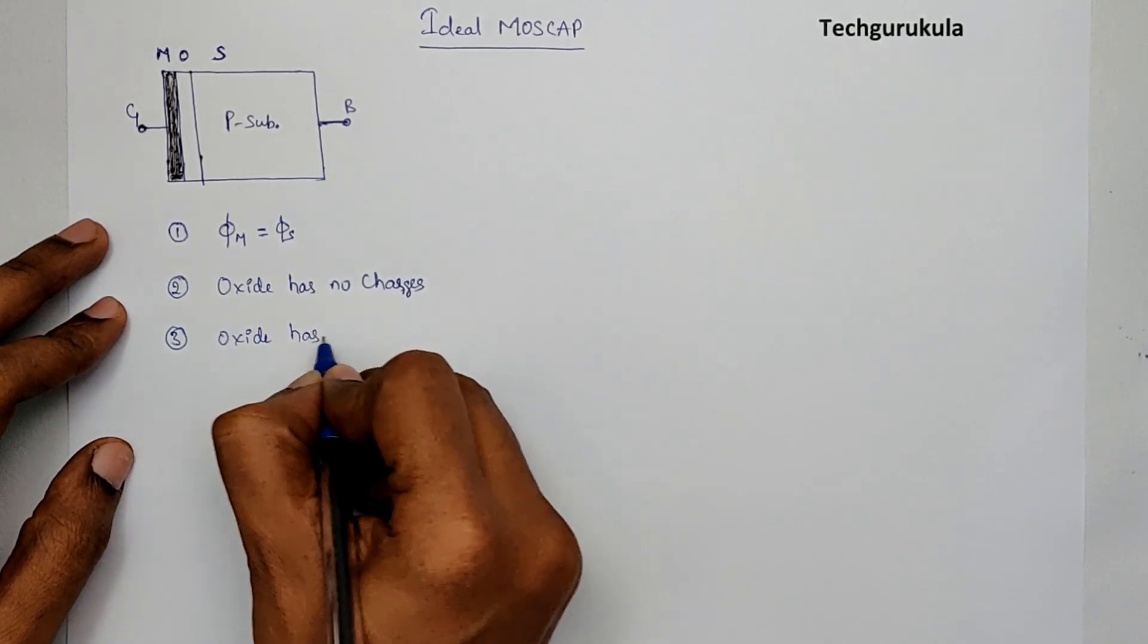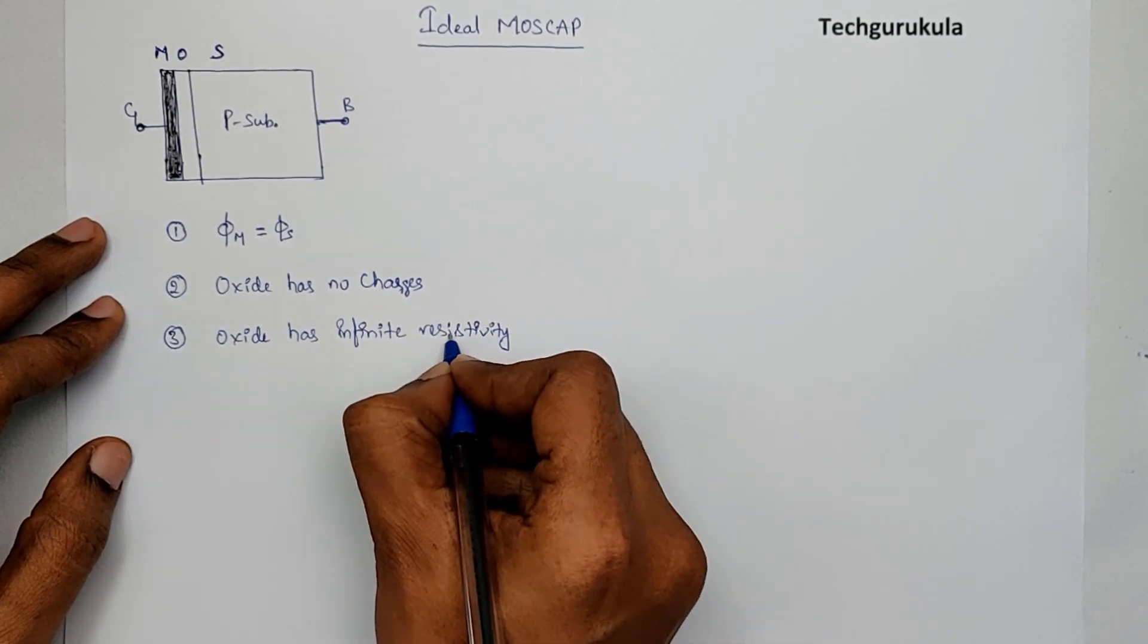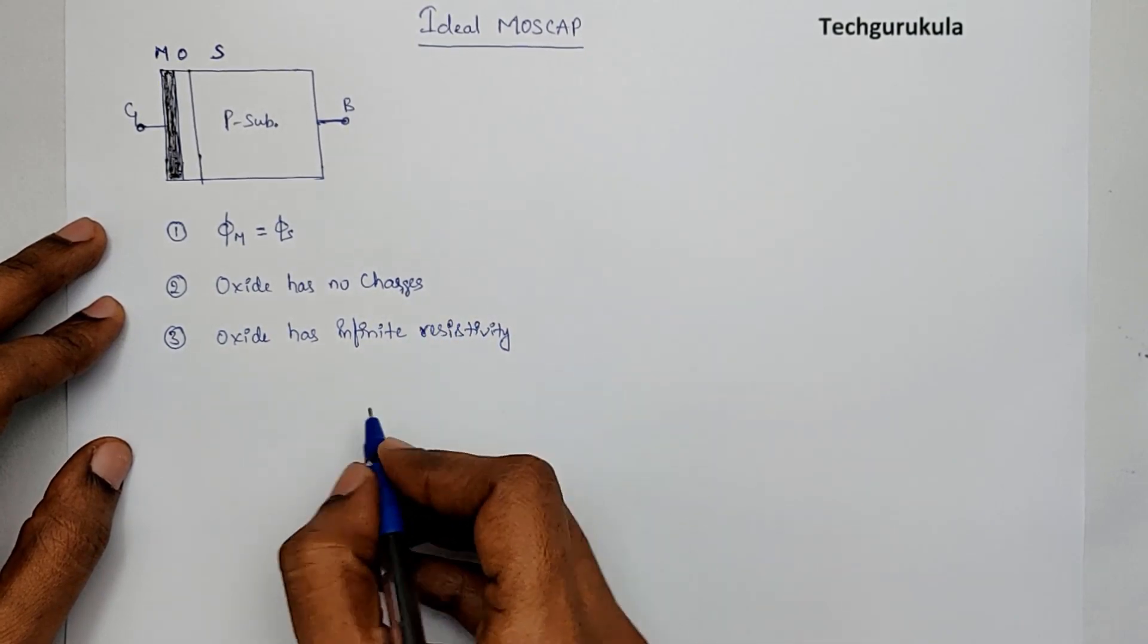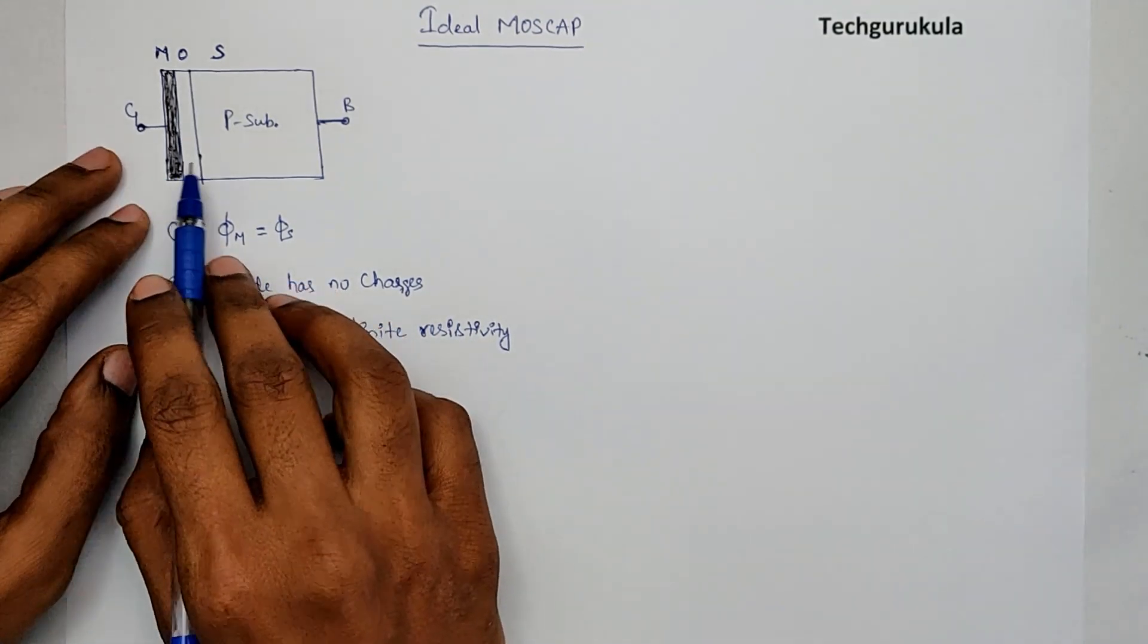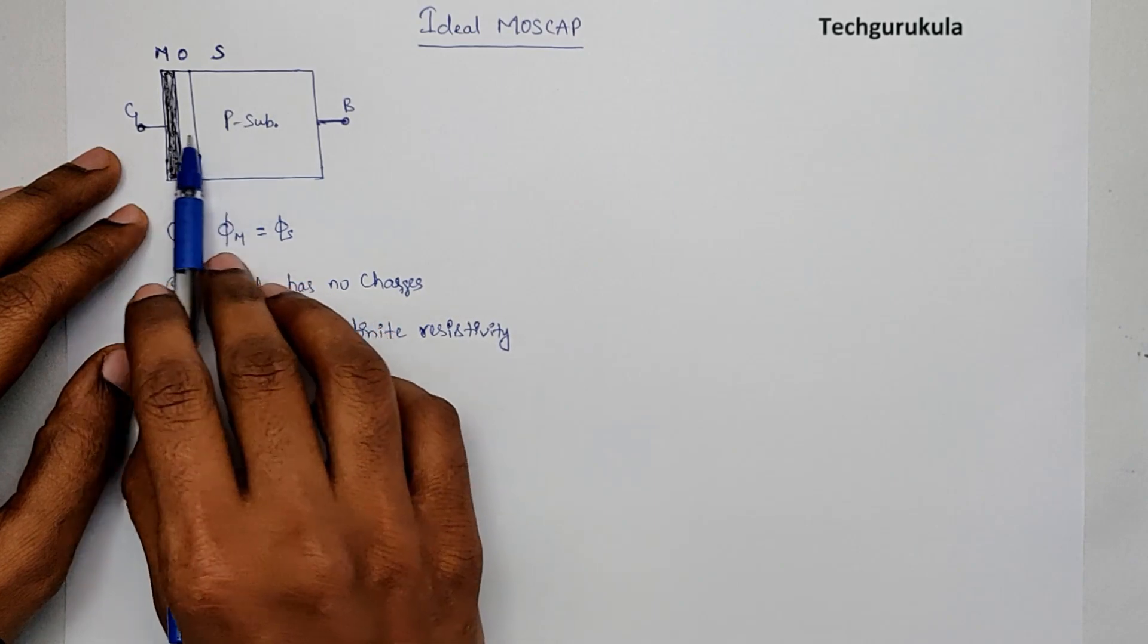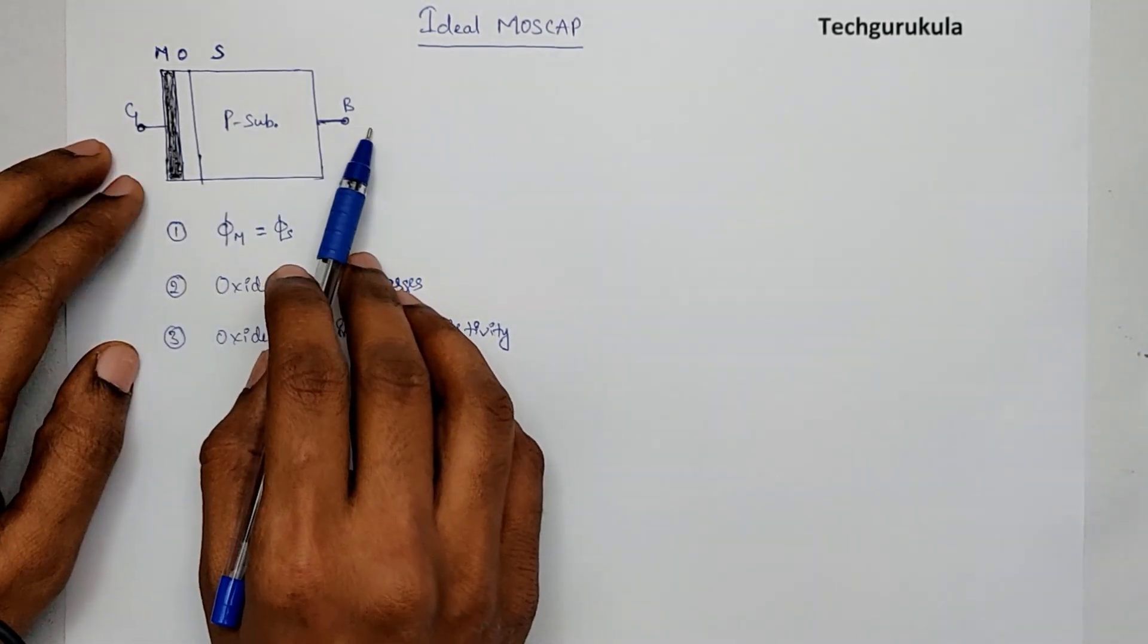And the third assumption that we're going to make is oxide has infinite resistivity. Which means because the oxide has infinite resistivity, there cannot be current flowing through the oxide when we do the operation with however voltage we apply.